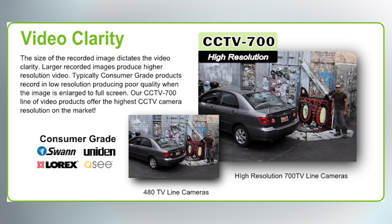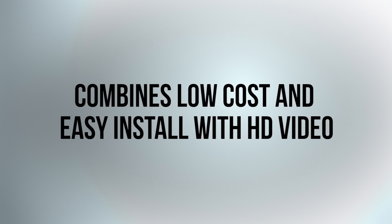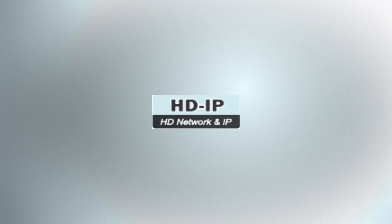The cameras range in resolution from 480 TV lines to a maximum of 700 TV lines. SDI is a new technology — it stands for Serial Digital Interface. This technology combines the low cost and easy installation of CCTV with 1080p resolution, also called HD or high definition. The cameras use the same cables, power supplies, and installation techniques as CCTV cameras, but produce excellent high definition video.